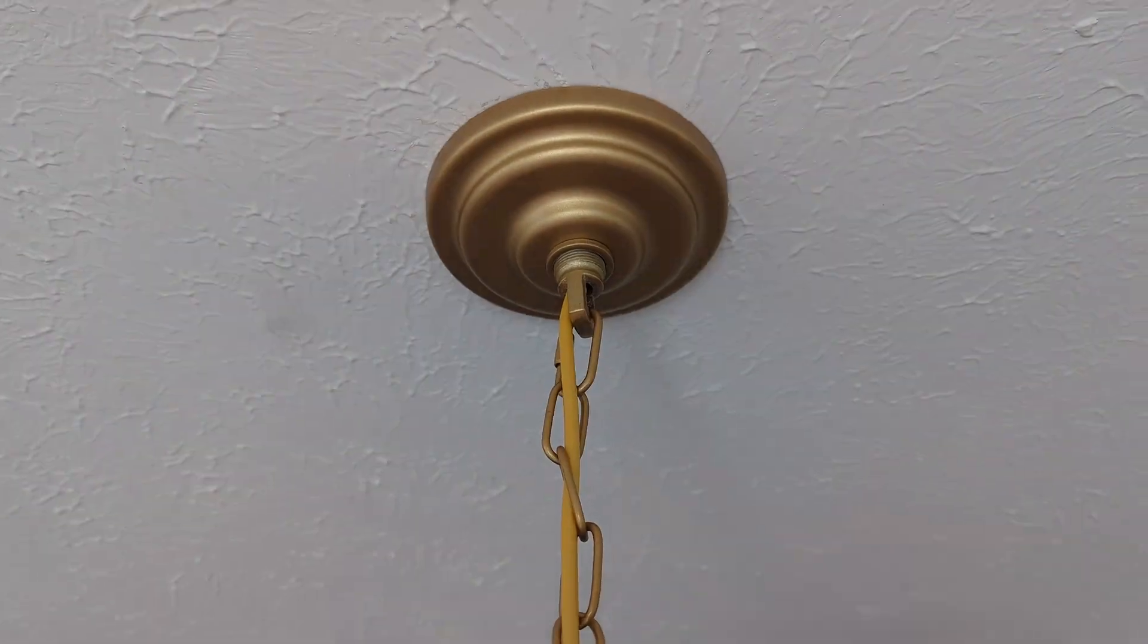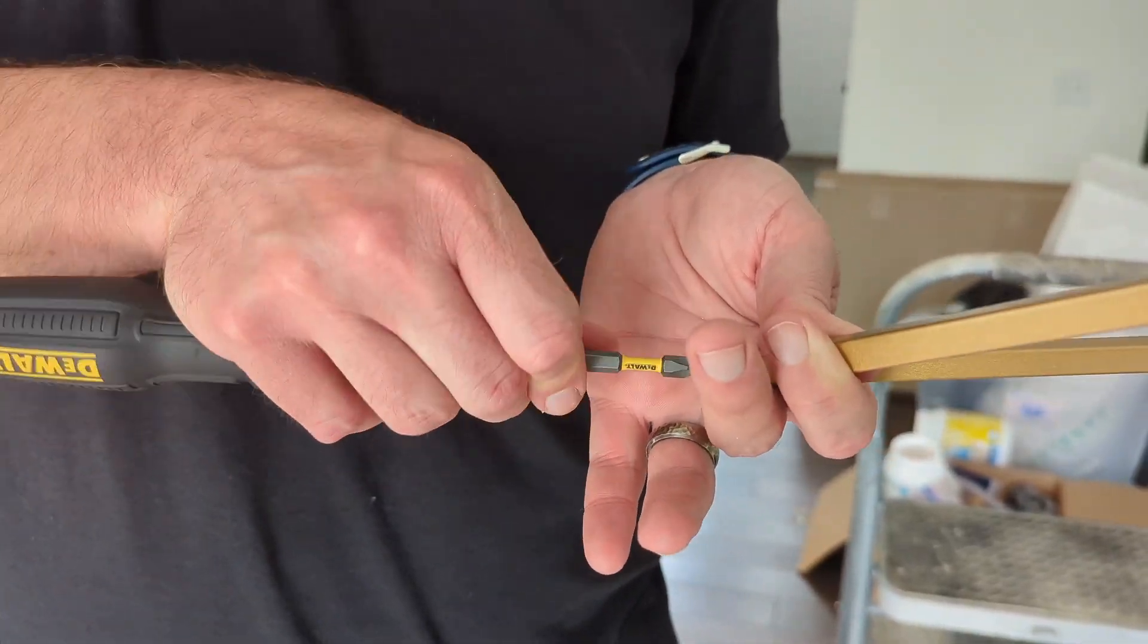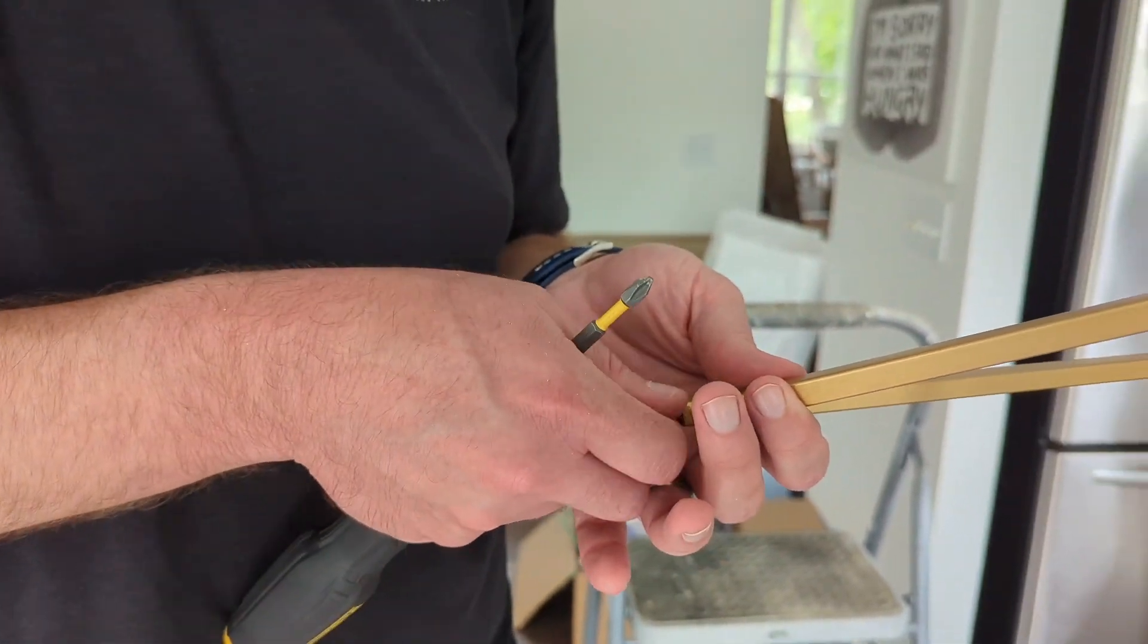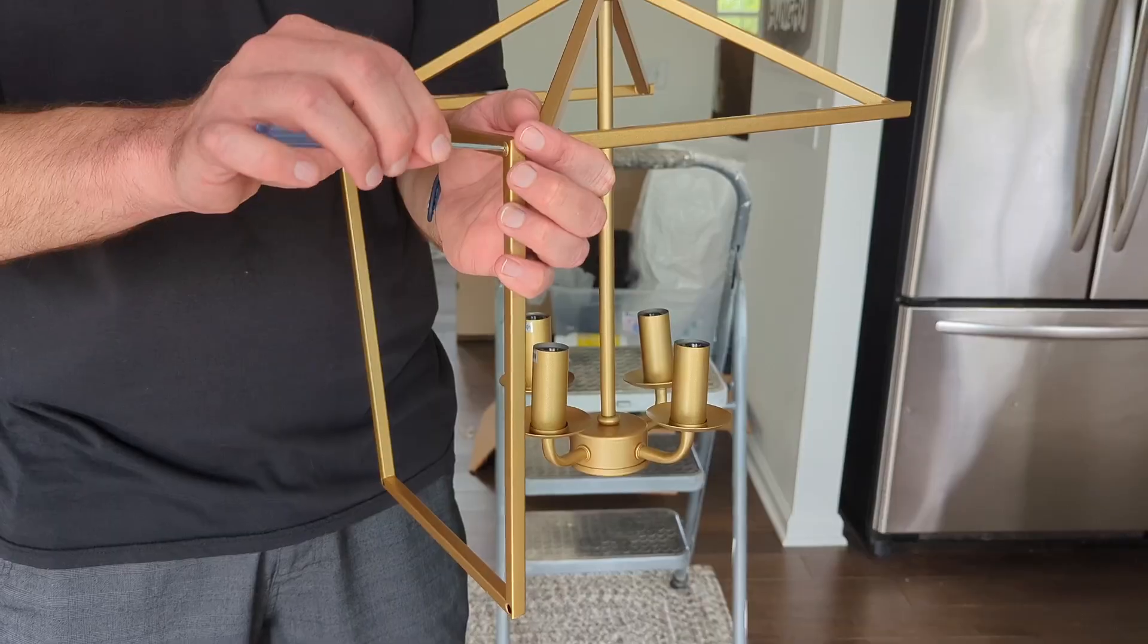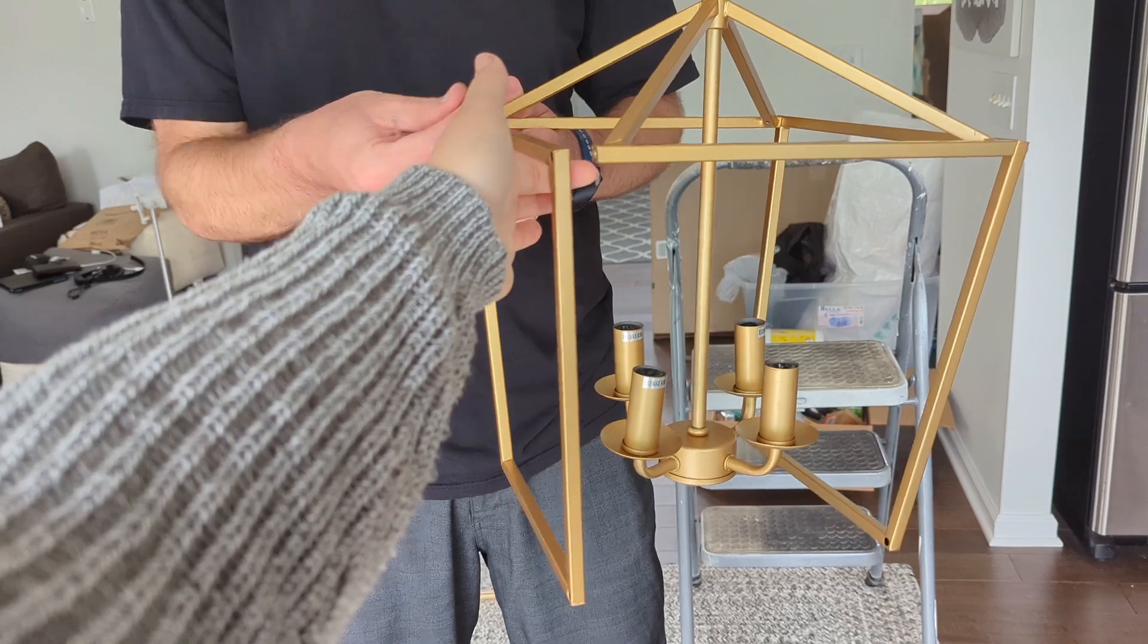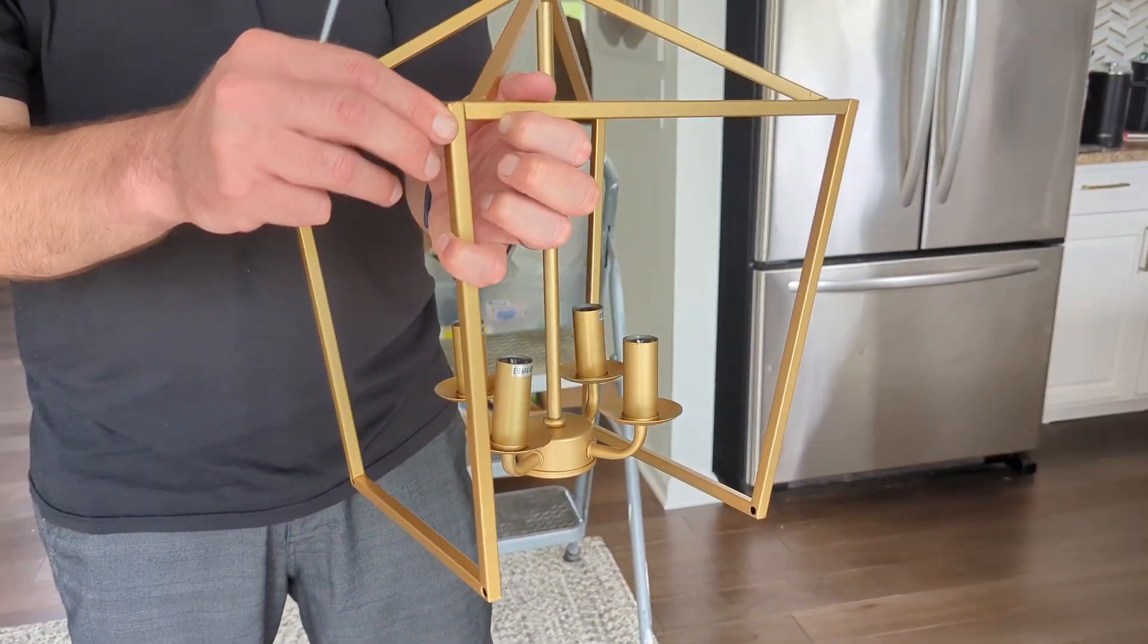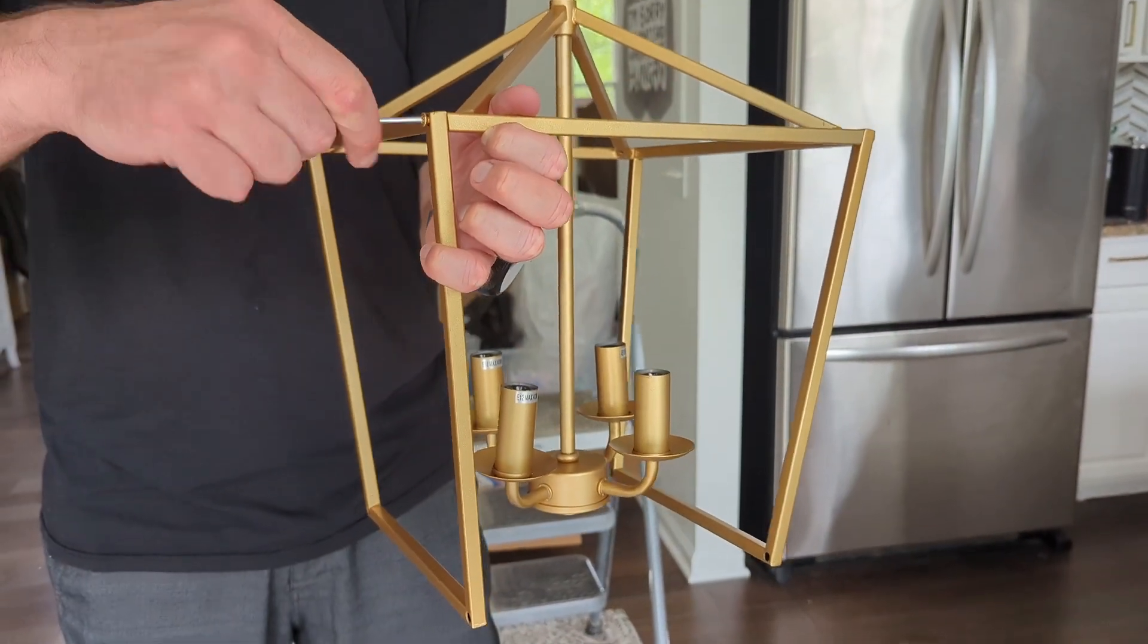You hook on your chain on the top as well as the bottom, and then what we did is we added the sides afterwards. You just unscrew the screws that are there. They are all gold so everything matches really nicely. Add in your sides and then you are good to add your light bulbs.